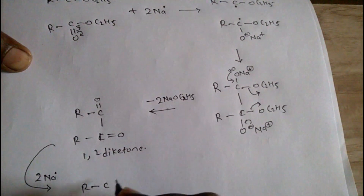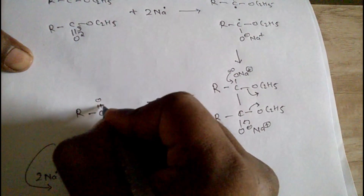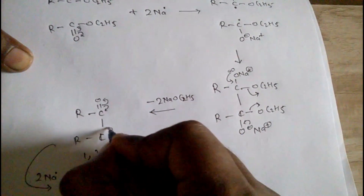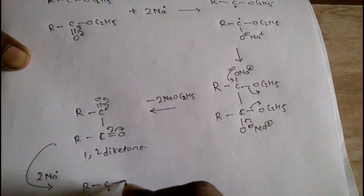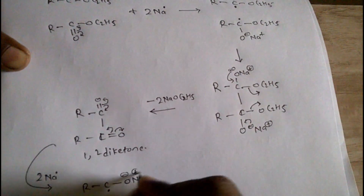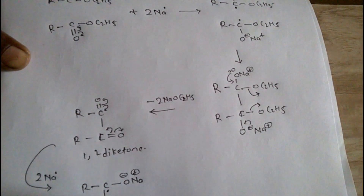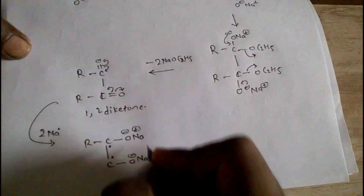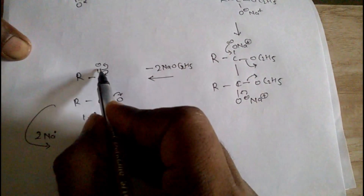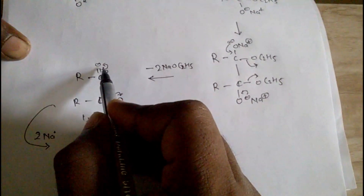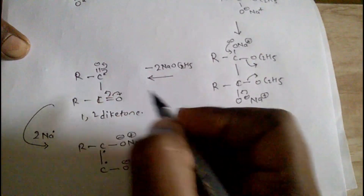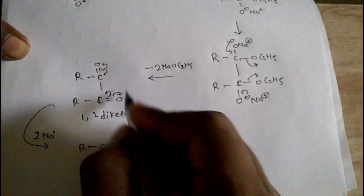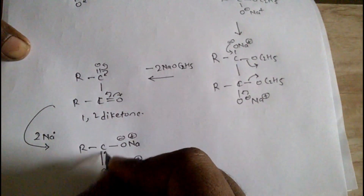We get R-C here again homolytic fission occurs, giving R-C-O⁻Na⁺ with radical on carbon, and O⁻Na⁺ on the other carbon. This bond breaks in homolytic fashion so one radical here and one radical here. The sodium radical is attached here.